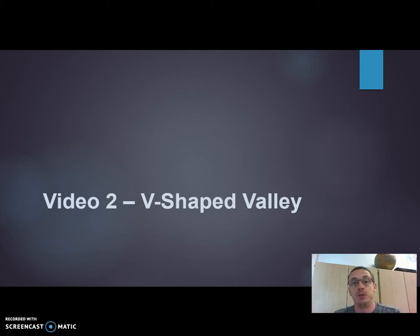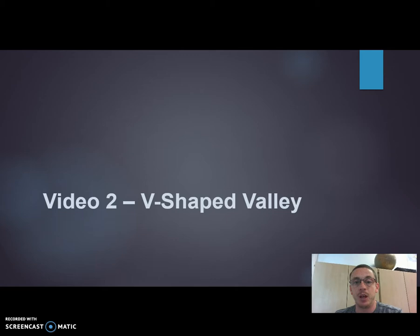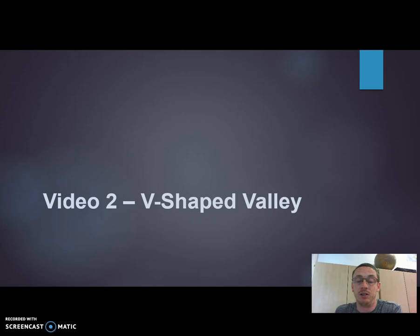So, V-shaped valleys. First, what is one? A V-shaped valley is the name of your typical upland river valley, and it's called this because it's got very steep sides that lead down to the river in something that closely comes to a V-shape.